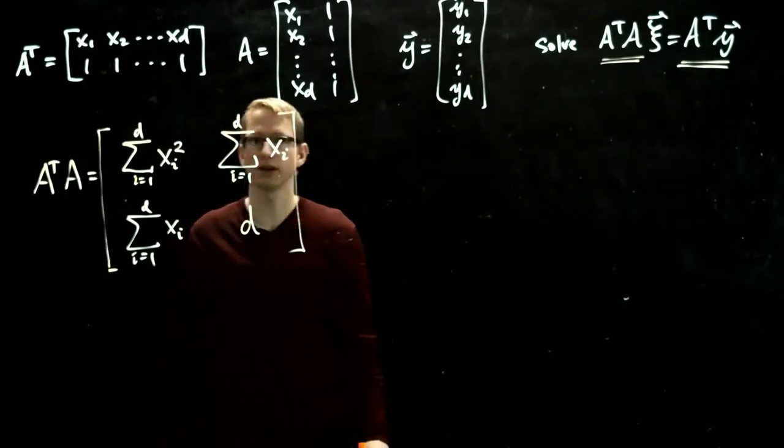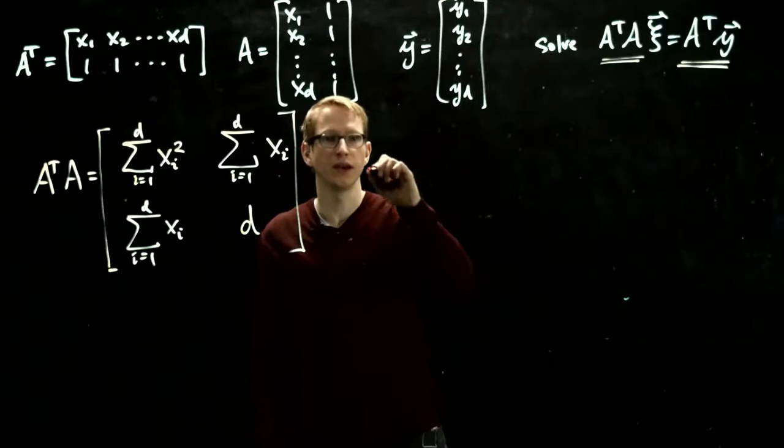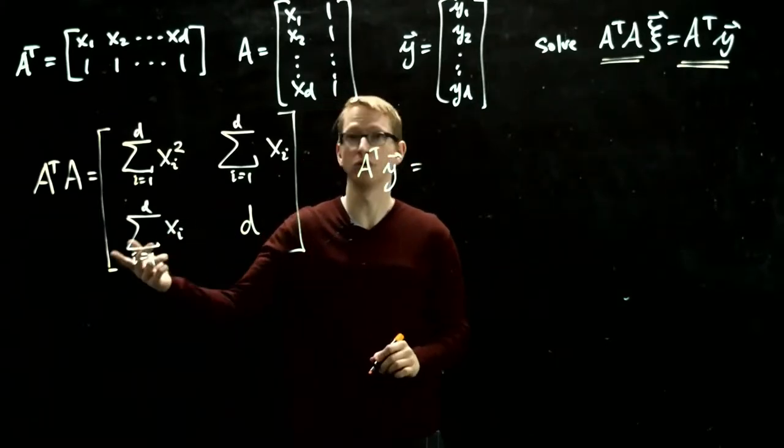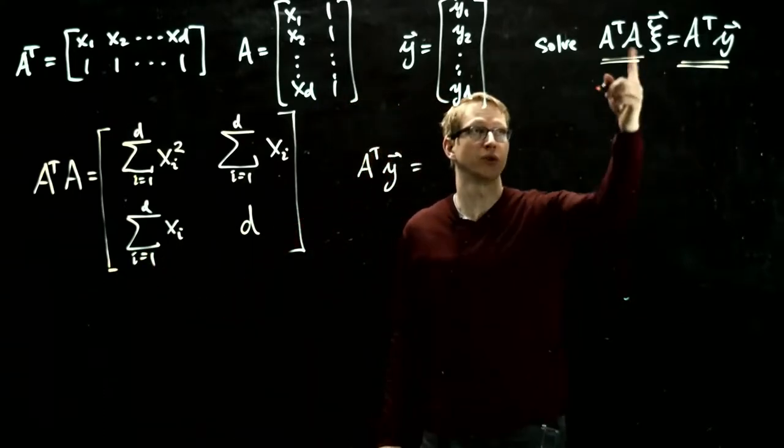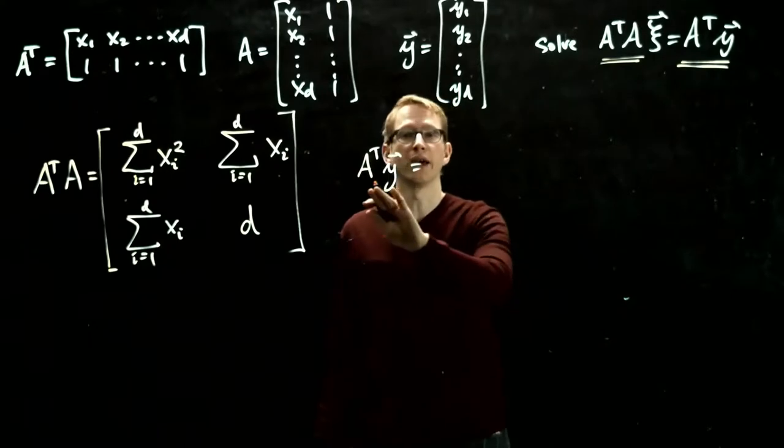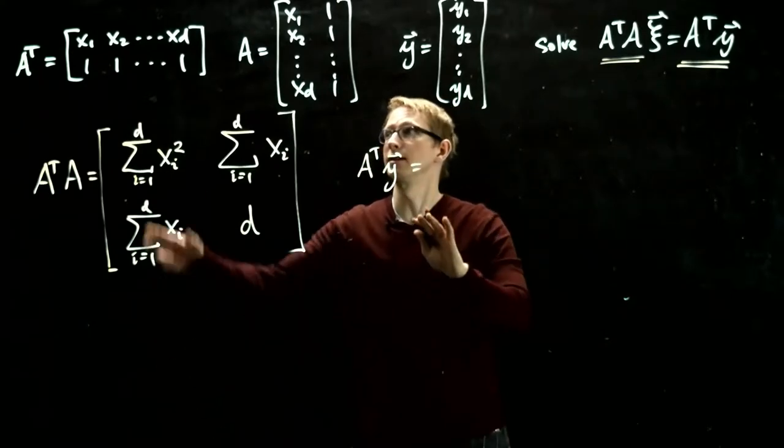So this is A transpose A. And A transpose y equals—first of all, notice that it's just a 2 by 2 matrix. So we're going to be solving a rather simple system, it's just 2 by 2.